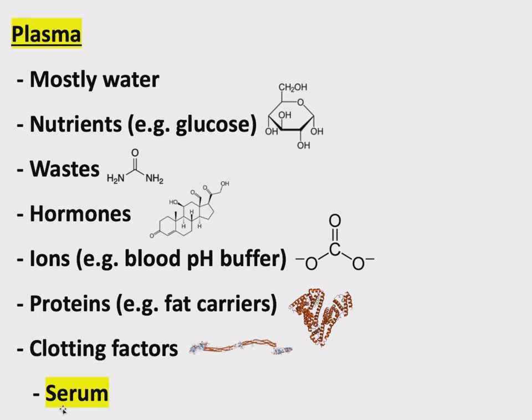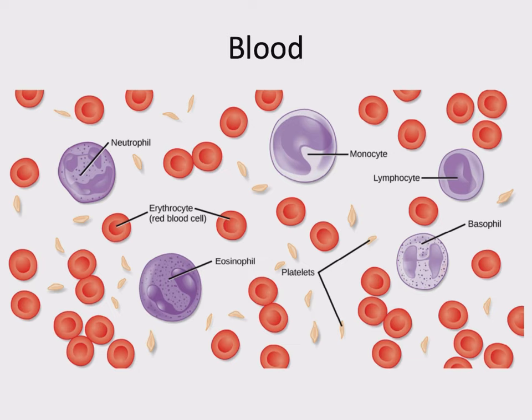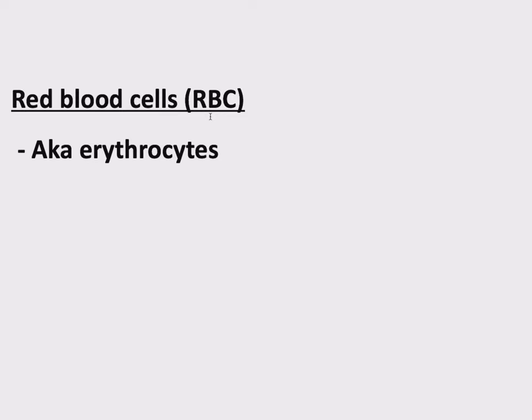Let's talk about the cells next. There are actually two different types of cells: red blood cells, or erythrocytes, and white blood cells, with many different types. All the white blood cells are called leukocytes. Red blood cells, abbreviated as RBC, also known as erythrocytes.